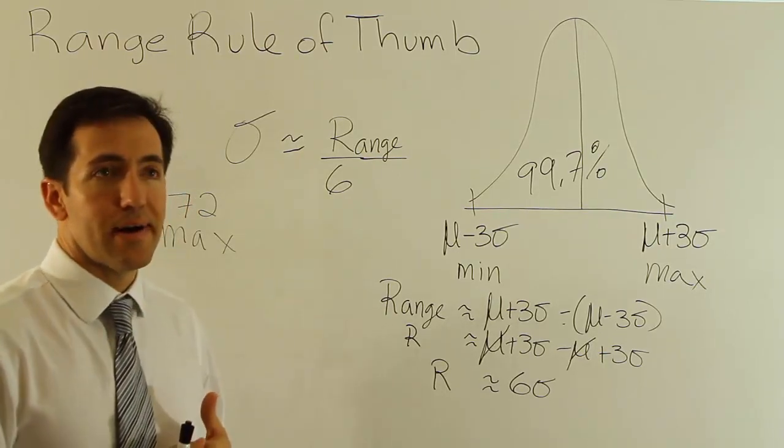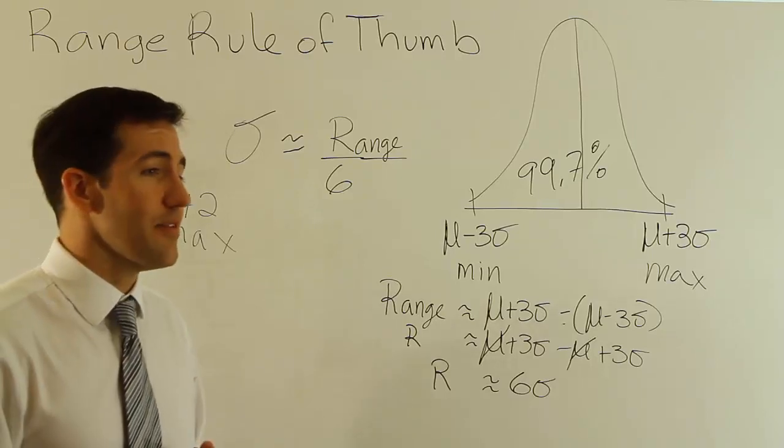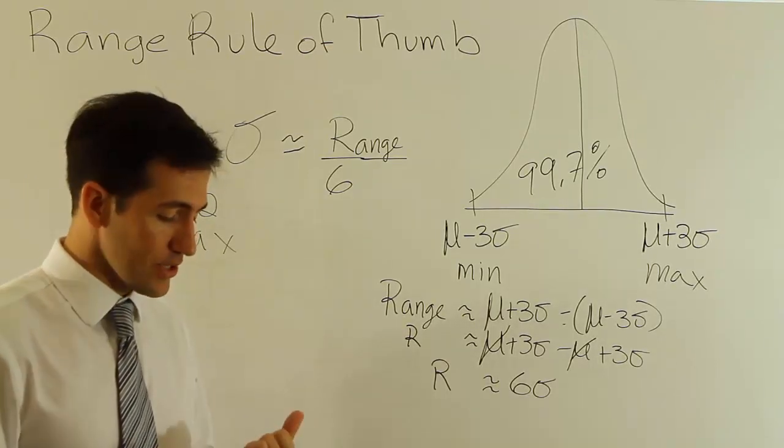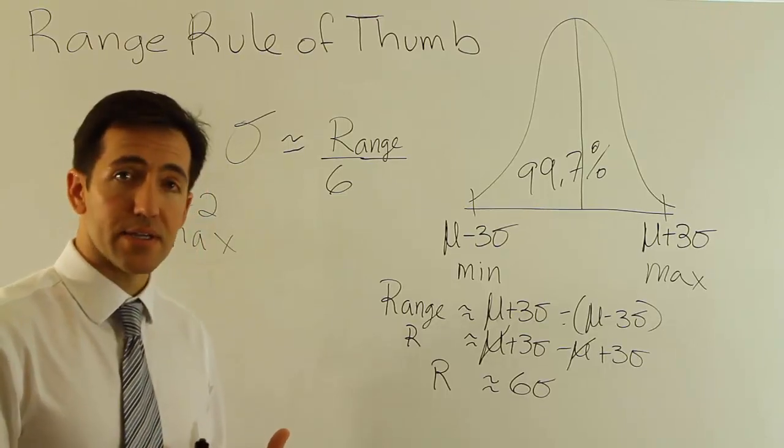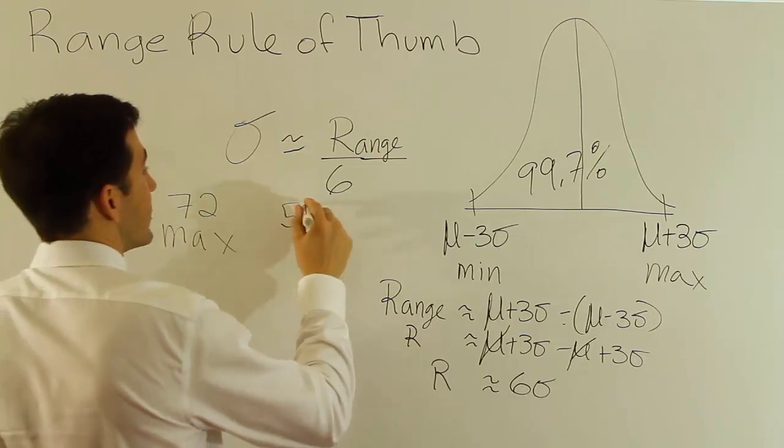So maybe like four foot nine, four foot ten, something like that. Let's take, for example, if we did four foot nine. Four foot nine is 48 inches plus another nine inches, so that's 57 inches if I do that. That's 57 for the short end.